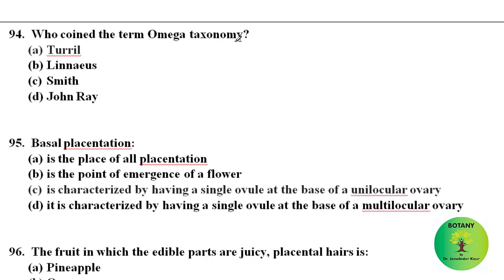Who coined the term omega taxonomy? The term omega taxonomy was coined by Turrill. Omega taxonomy is a modern experimental taxonomy that includes data from ecology, phytochemistry, phytogeography, cytogenetics, and physiology.